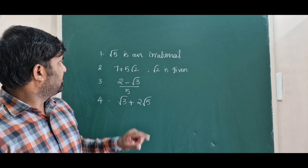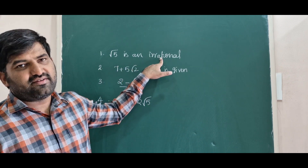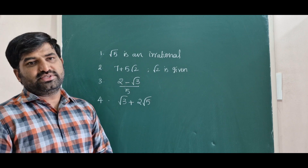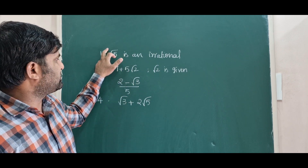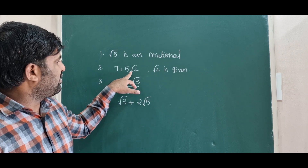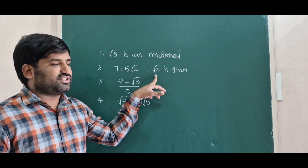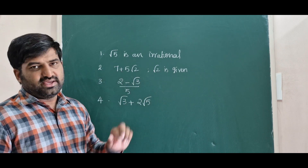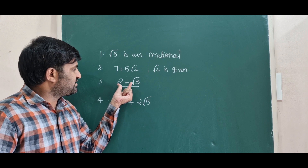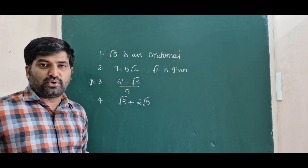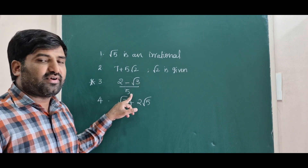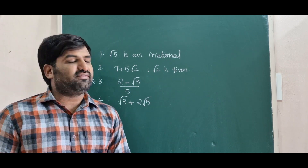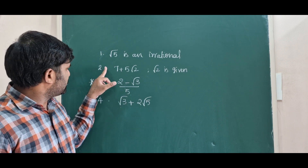The first four questions of this chapter are: first one, proving that root 5 is an irrational number. Next question is proving 7 plus 5 root 2 is an irrational number. Third question is 2 minus root 3 by 5 — this is a 2024 board question — we need to prove it is an irrational number. The fourth question is root 3 plus 2 root 5 is an irrational number.